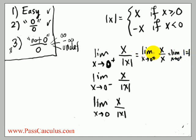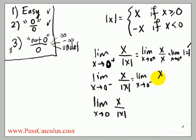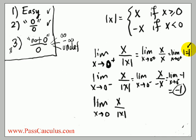The answer for the right-hand limit is positive 1. For the left-hand limit, x is a small negative number, so the absolute value of x is minus x. We get the limit as x goes to 0 from the left of x over (minus x), which simplifies to negative 1. So the left limit is negative 1 and the right limit is positive 1 — since these are different, the two-sided limit does not exist.